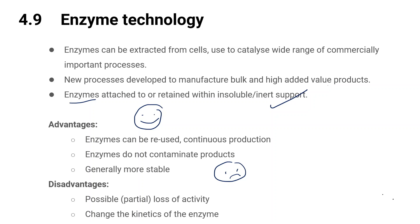Let's look at the disadvantages. There is possible partial loss of activity or catalytic properties — some enzymes may reduce or lose activity. There might also be a change in the kinetics of the enzyme. Since the enzyme cannot move, there is a possibility of reduced production of products because only the substrate can move to find the enzyme.